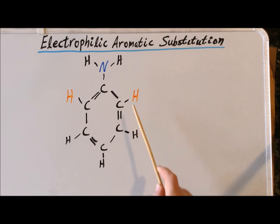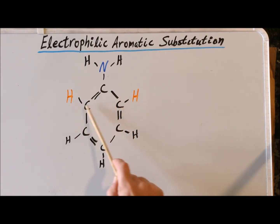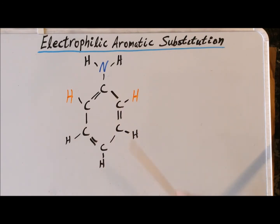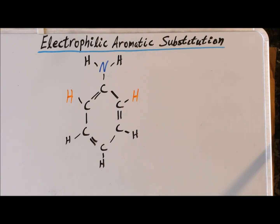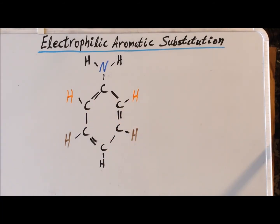Hydrogen atoms that are attached to the next carbon over, either to the right or to the left of the carbon that holds the substituent, are said to be in the ortho position. So either the hydrogens here, or any substituents that might replace them, are said to be ortho to the first substituent. We've written them here in orange — the O of orange for the O of ortho. The two ortho positions in orange are exactly equivalent to each other and therefore indistinguishable.